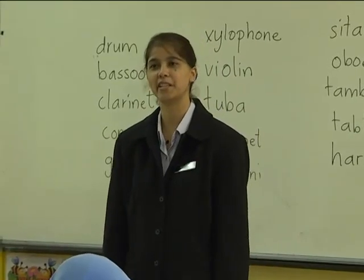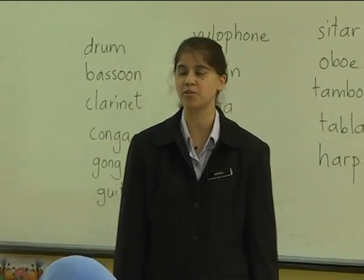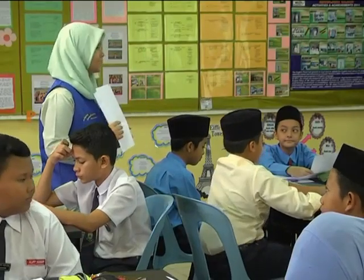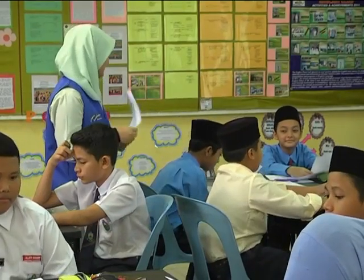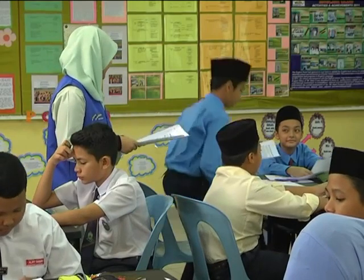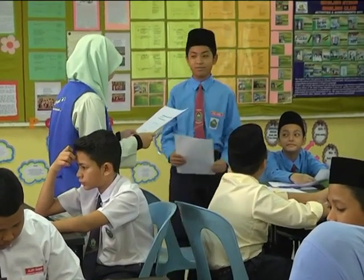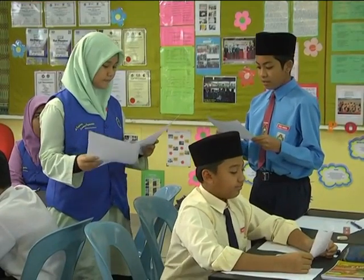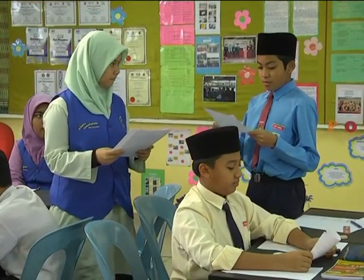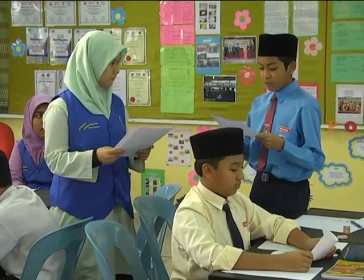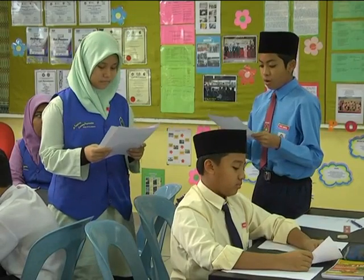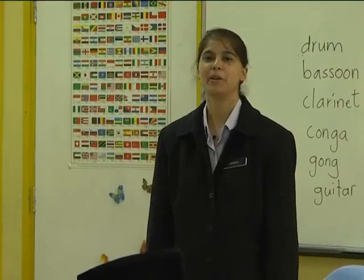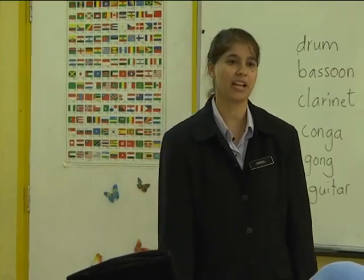Okay, go on to your next question. Who would you like to pose your question to? I would like to pose my second question to Saeed from group number two. Name some instruments in the wind family. Some examples of instruments from the wind family are the flute, oboe, clarinet, and bassoon. Okay, we move on to the last group.